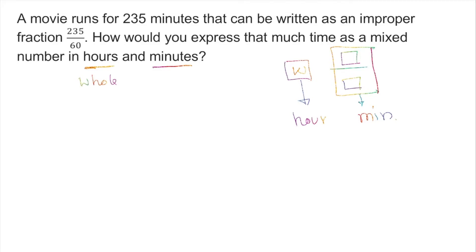We have 235 minutes, and we know 60 minutes is one hour. So if I divide 235 over 60, I can use trial and error — for example, 3 times 60 is 180, and 4 times 60 is 240.